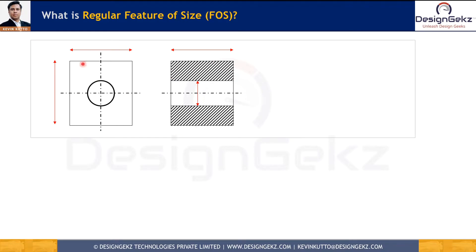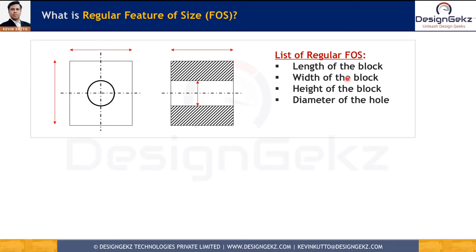In this block example, the width, length, thickness of the block, and the diameter of the hole are regular features of size because these are opposed elements with a single dimension and tolerance. If the block has a slot, the width and depth of that slot would also be regular features of size.